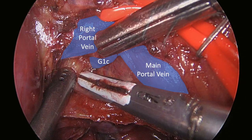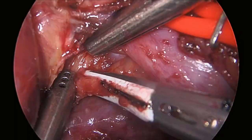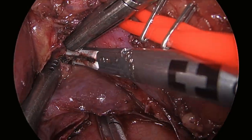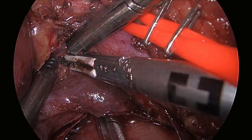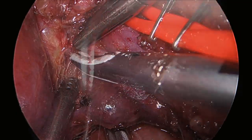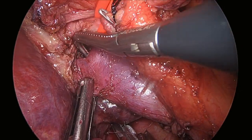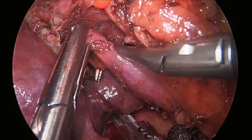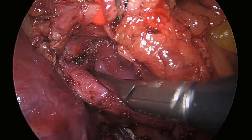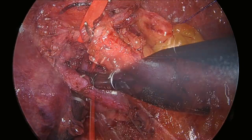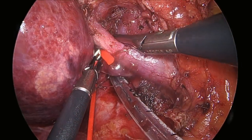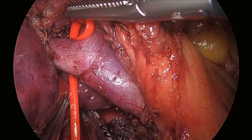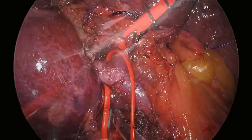Typically this caudate branch is ligated in a right hepatectomy. However, in this case, with a large caudate lobe in a cirrhotic patient, we opted to preserve this vein. We isolated our main right portal vein distally to this branch. Thankfully, the portal vein embolization was further intraparenchymal from here, allowing us a good distance on our right portal vein to allow for extrahepatic control.